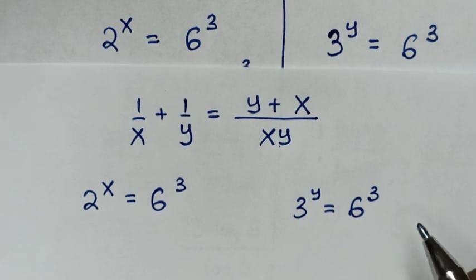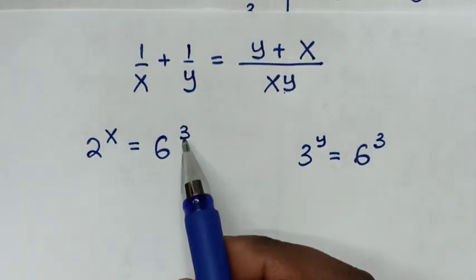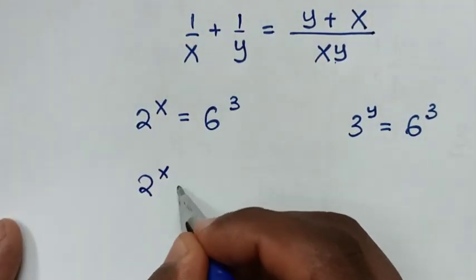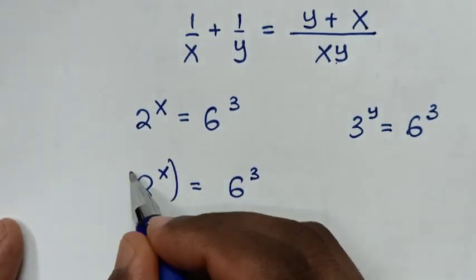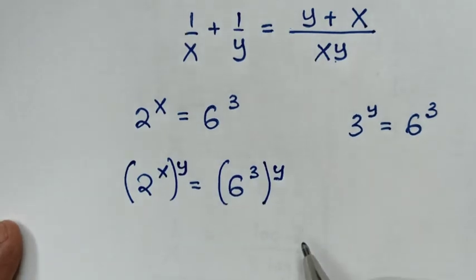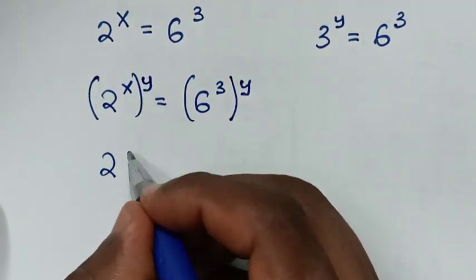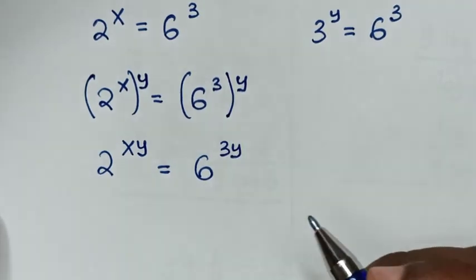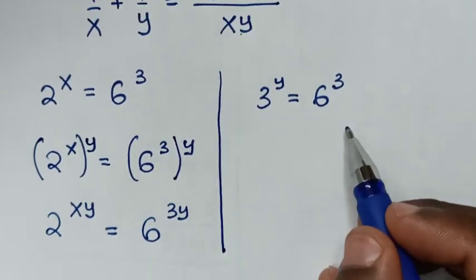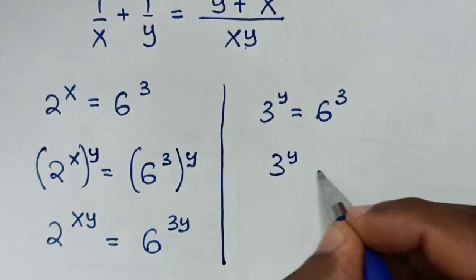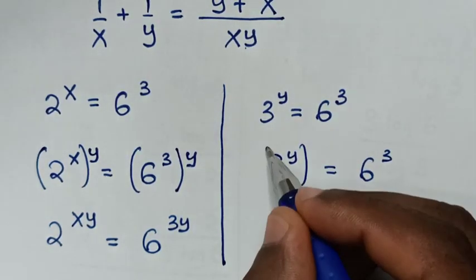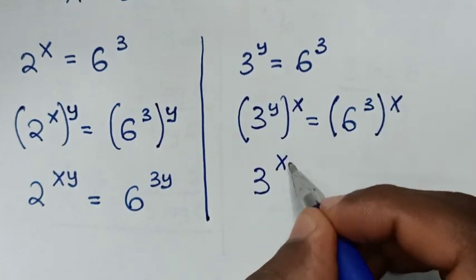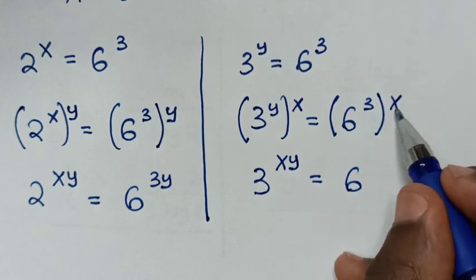From the first equation, 2 power of x equals 6 power of 3. We multiply the exponent by y on both sides to get 2 power of xy equals 6 power of 3y. From the second equation, 3 power of y equals 6 power of 3. We multiply the exponent by x on both sides to get 3 power of xy equals 6 power of 3x.